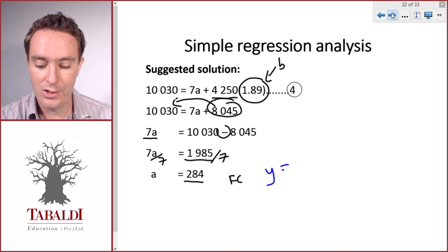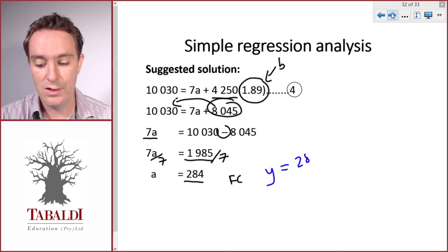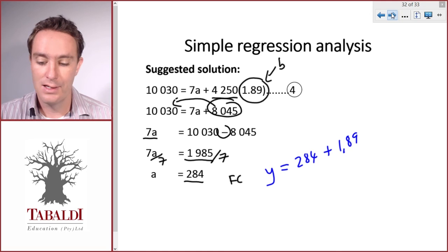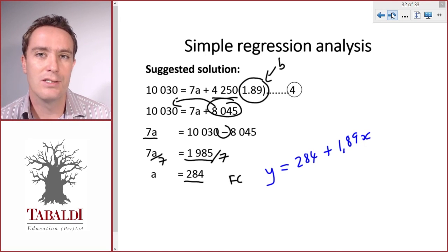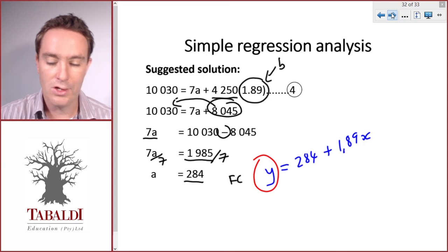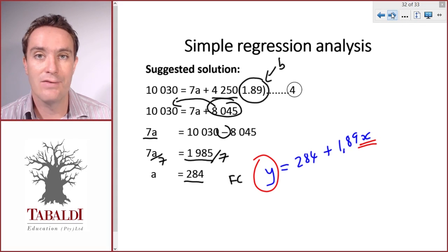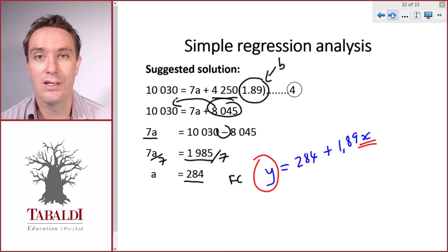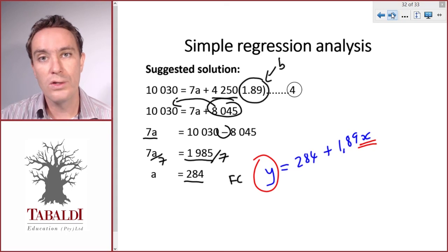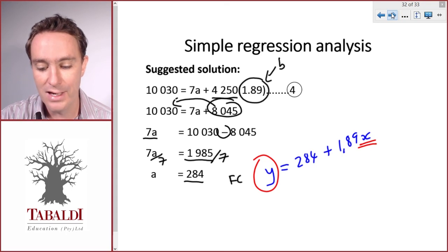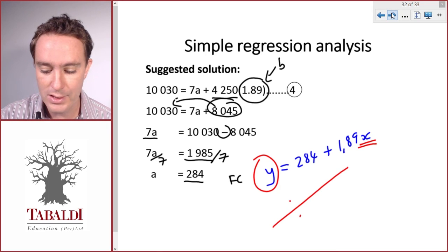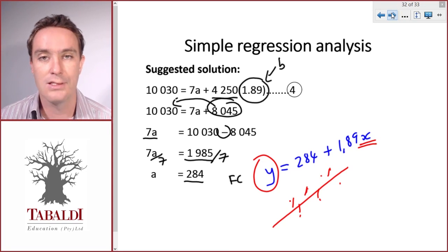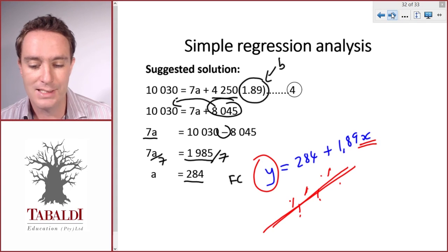Now we can write out our linear equation. Y equals fixed cost, 284, plus variable cost per unit, 1.89, times x. Now we can use this linear equation to forecast any total cost for a future month if we know what the activity level is going to be. This is simple regression analysis or the least squares method, and that is the most reliable method of cost estimation since we use all the observations from the past, not just the highest and the lowest. The line is then drawn statistically through all the points so that the errors above and below the line all cancel out. So it's the shortest total distances overall. This line is the line of best fit, and that's simple regression analysis.